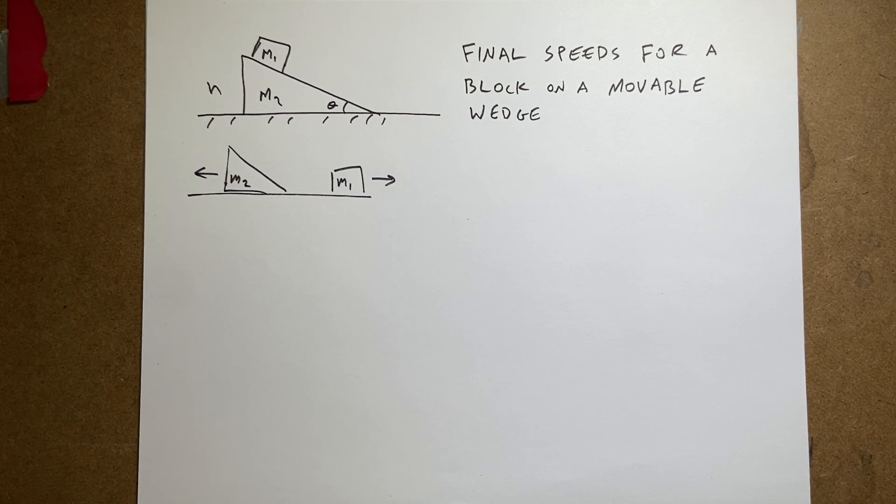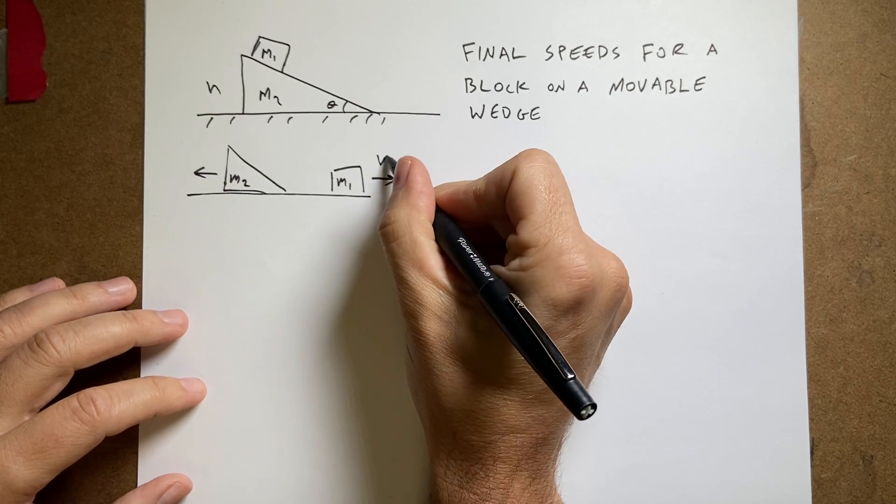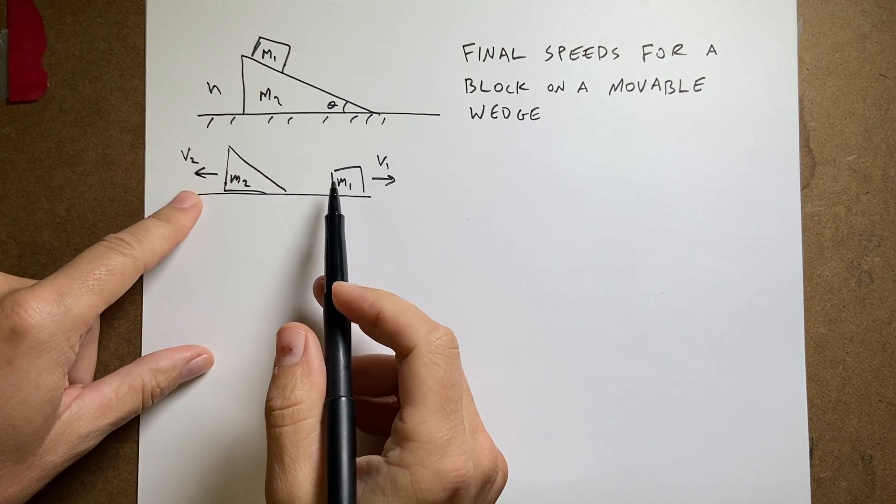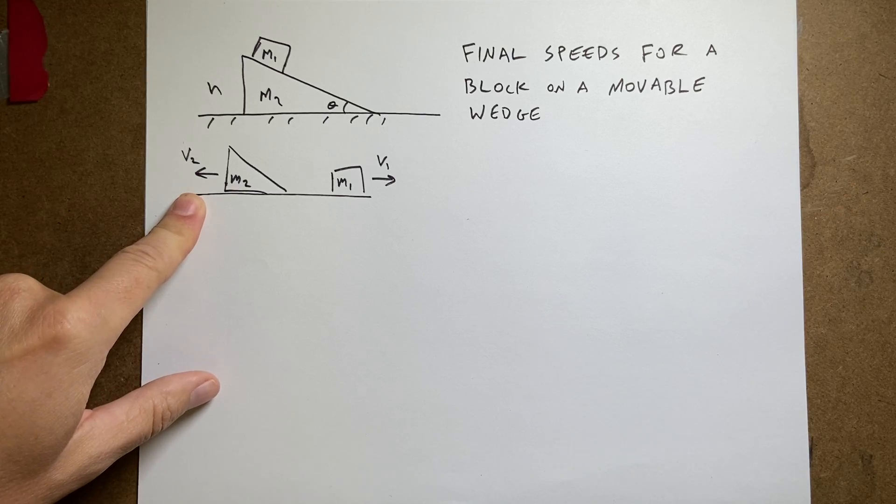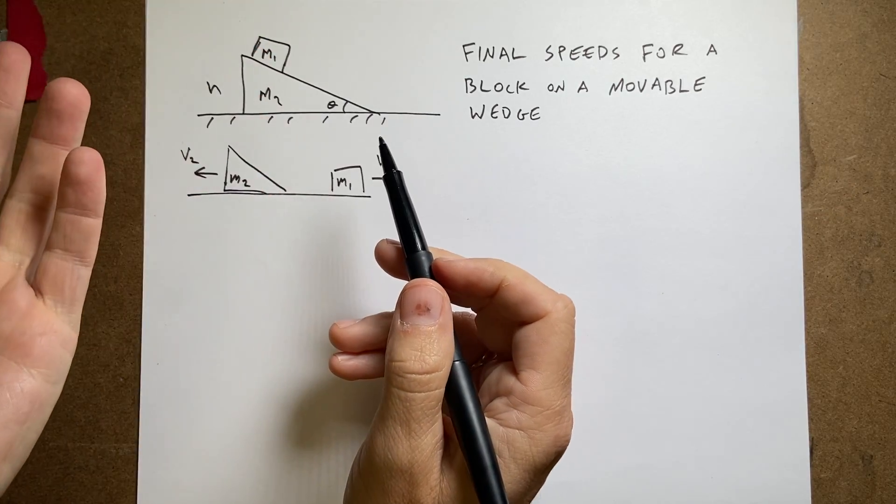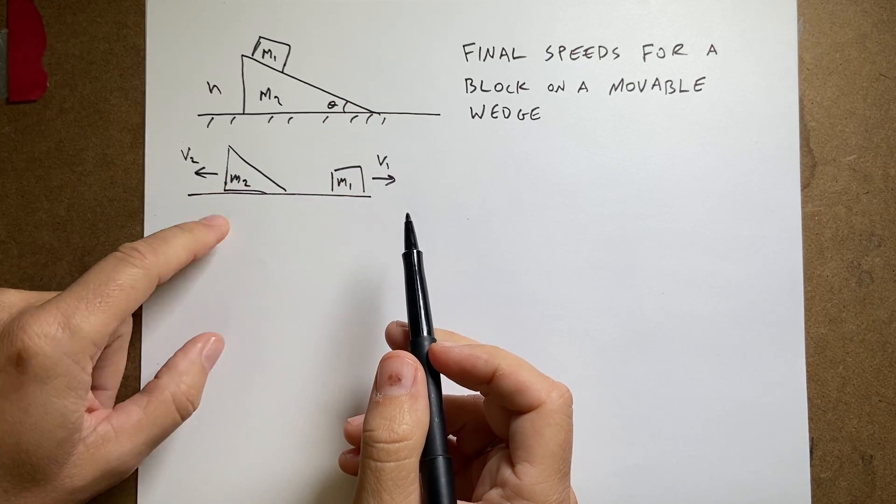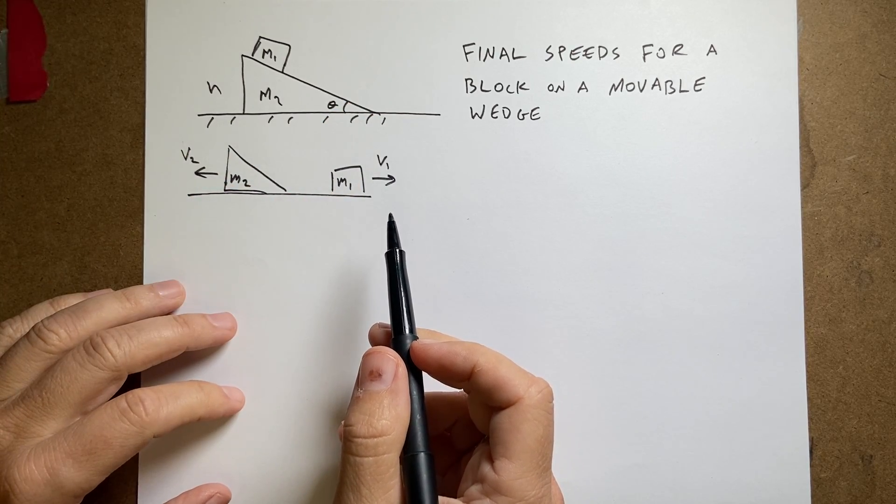So how do we do this problem? Well, let's give some variables here. Let's just call this V1, and call this V2. I'm going to use scalar values. And I'm going to assume that this starts from rest. So I don't need those. And if I just call this V1, it will be the velocity of mass 1 at the end, and V2 the velocity of mass 2 at the end, too.